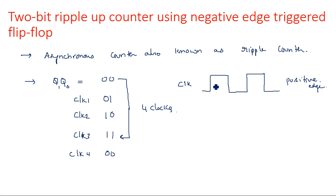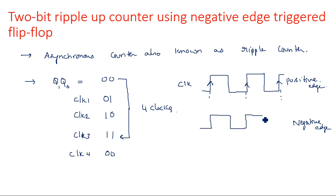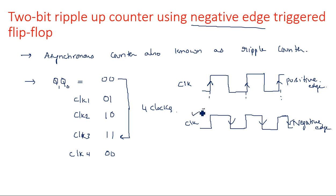A positive edge trigger flip-flop responds to the 0 to 1 rise — only at that particular transition will the state change or increment occur. Coming to negative edge trigger: the same clock signal is applied, but here changes occur whenever the negative edge occurs. Negative edge is nothing but the falling edge, from 1 to 0. Negative edge means the changes occur when a negative-going edge occurs, that means a 1 to 0 transition.